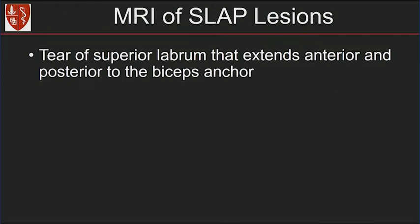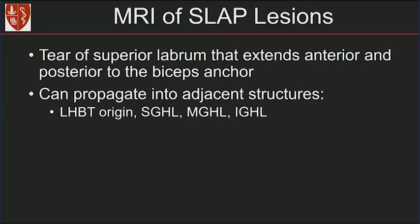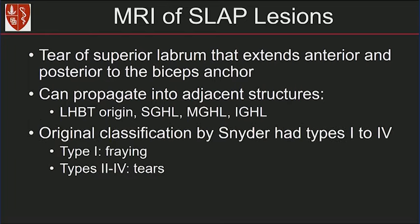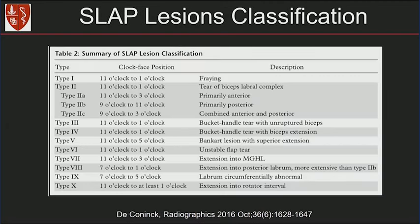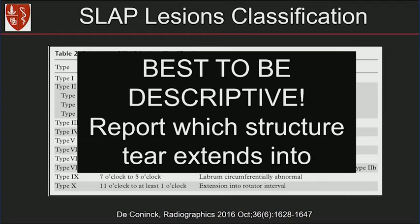SLAP lesions refer to tears of the superior labrum that extend anterior and posterior to the biceps anchor. They can propagate into adjacent structures: the long head biceps tendon and origin, and the superior and middle inferior glenohumeral ligaments. The original classification by Snyder had types 1 to 4, but now we have up to 10 types. For us, it's best to be descriptive — just report the labral tear and which structure the tear extends into. Don't worry about typing it, because even the orthopedic surgeons don't remember the different types.